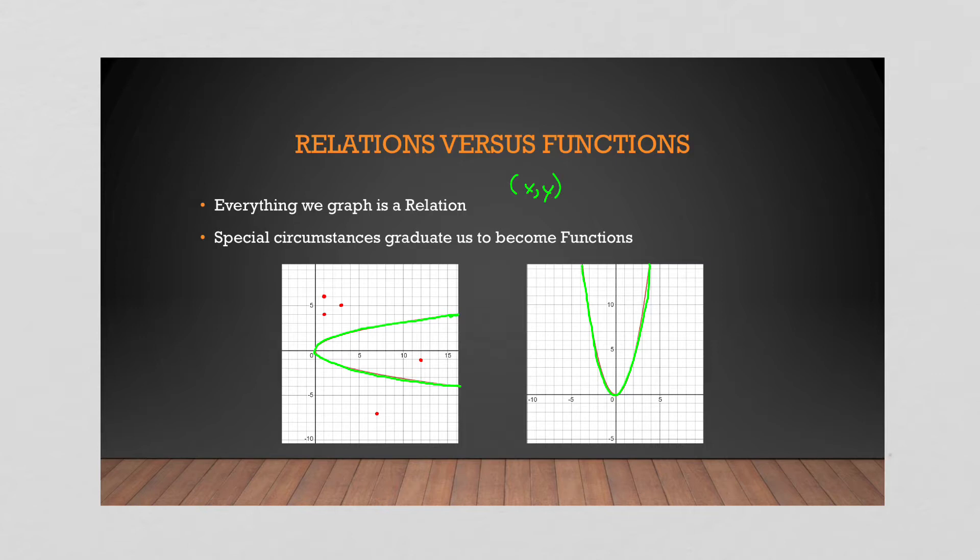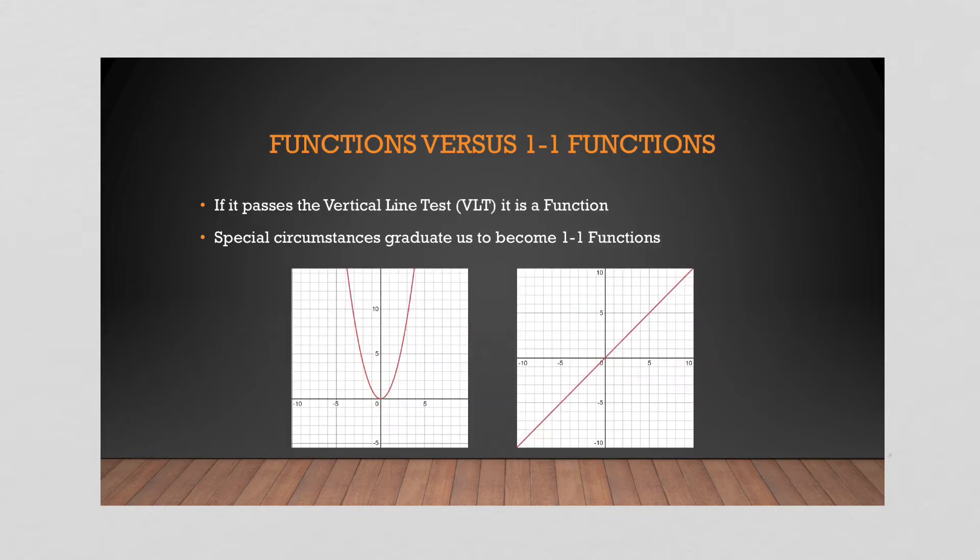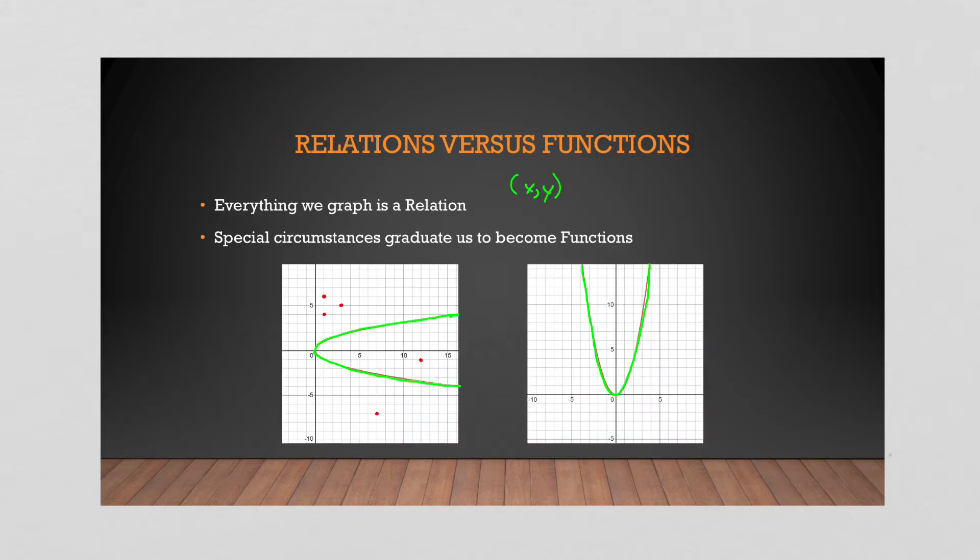So how do we determine if a relation becomes a function? Well, in order to become a function, you have to pass a very important test. And it is called the vertical line test. And as I like to refer to it, for simplicity, the VLT. So if you pass what's called the vertical line test, you graduate from a relation to a function. And it's really simple. Draw a vertical line anywhere through your graph.